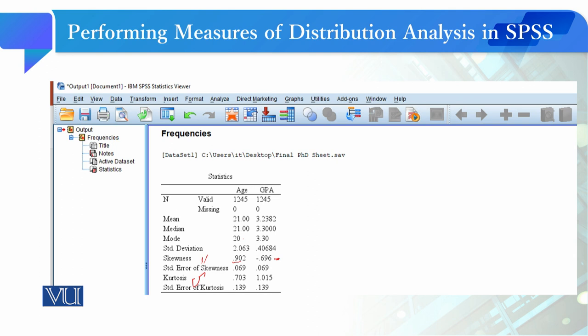We can cross-check by seeing that the mode is actually 3.30 and the mean is 3.23. We can see that when the mode is greater than the mean, there are chances of negative skewness. We can see here practically when the mode is greater, we get negative skewness.